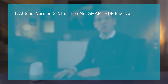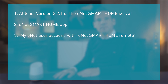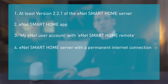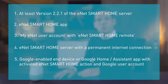First of all, your eNet Smart Home server needs to be at least version 2.2.1. Second, you need a smartphone with the eNet Smart Home app. Third, a my eNet user account with remote access — eNet Smart Home remote — activated. Fourth, the eNet server is permanently connected to the internet. And fifth, a Google Assistant-enabled device or Google Home app with activated eNet Smart Home action, as well as a Google user account.